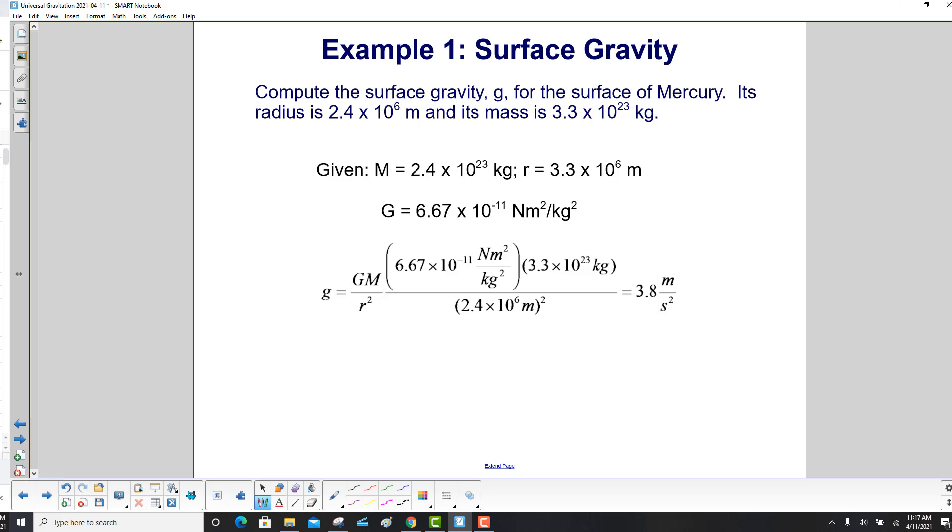We list our givens for Mercury. It has a mass here and a radius here. Here's our gravitational constant, the universal gravitational constant. And little g is big G times big M divided by R squared. Put in the numbers, and we find that the surface gravity for Mercury is 3.8 meters per second squared. And you can compare that to the surface gravity for Earth, which is 9.8 meters per second squared.